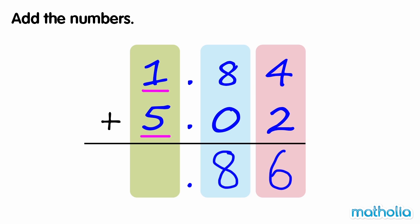Finally, we add the ones. 1 one plus 5 ones equals 6 ones. So 1.84 plus 5.02 equals 6.86.